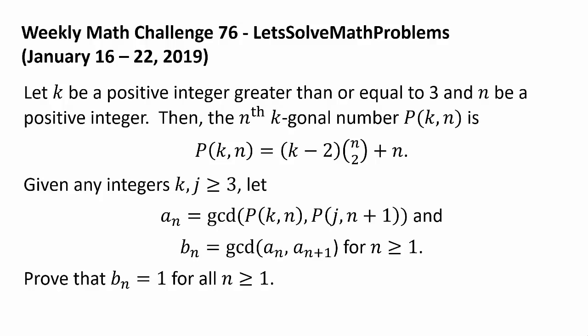Let k be a positive integer greater than or equal to 3 and n be a positive integer. Then the nth k-gonal number P(k,n) is (k-2) times n choose 2 plus n. Given any integers k and j greater than or equal to 3,